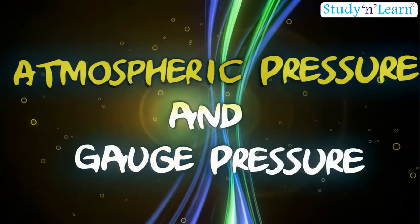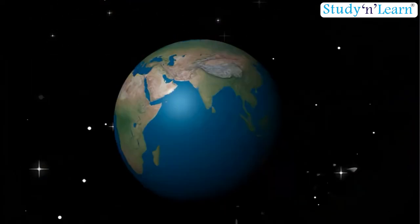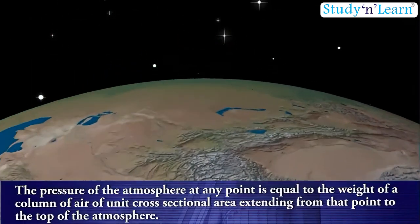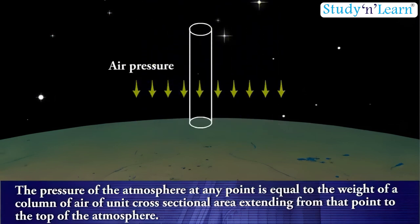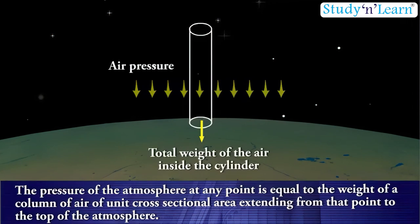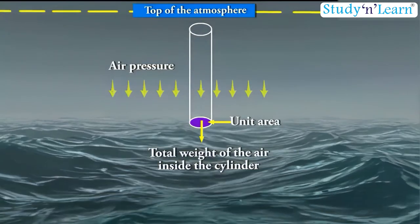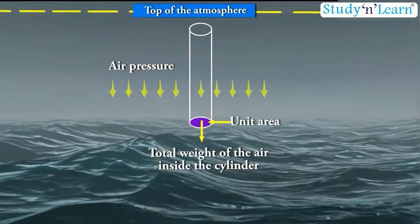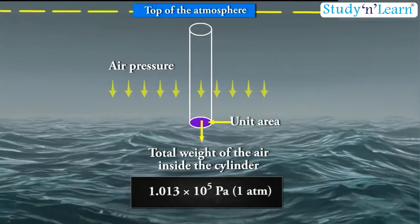Atmospheric pressure and gauge pressure. The pressure of the atmosphere at any point is equal to the weight of a column of air of unit cross-sectional area extending from that point to the top of the atmosphere. At sea level, it is 1.013 × 10⁵ Pa or 1 atmosphere.